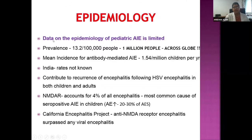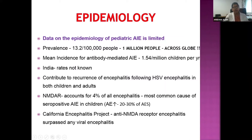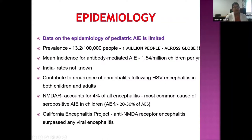Regarding epidemiology, data on pediatric autoimmune encephalitis is very limited. In adults, prevalence is about 13 patients per 100,000 — extrapolating globally, at least 1 million people are affected. In children, the incidence is about 1.5 per million children per year; rates from India are unknown. NMDA receptor encephalitis is the most common cause of serology-positive autoimmune encephalitis in children, contributing about 4% of total encephalitis in older data, with newer literature showing 20–30% of AES attributed to this entity.